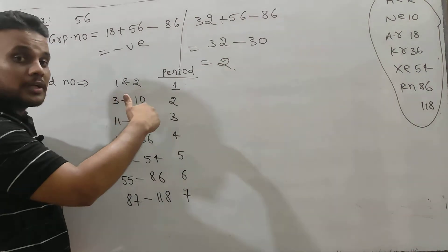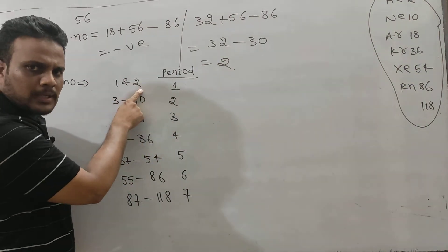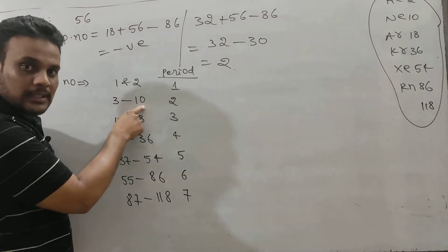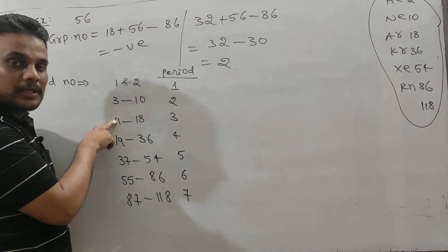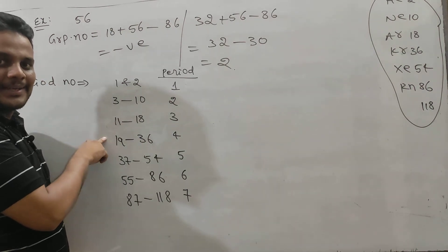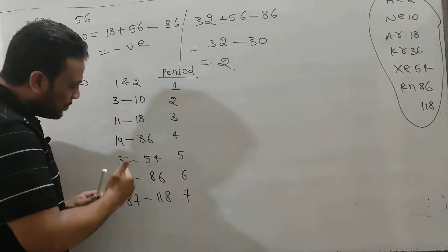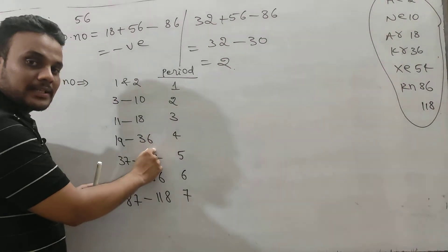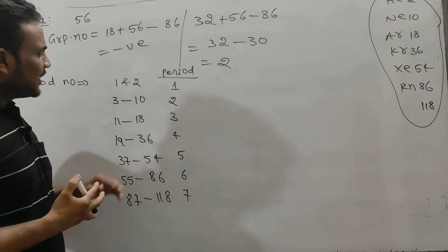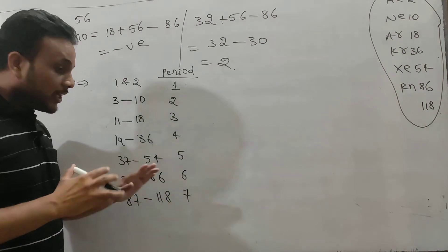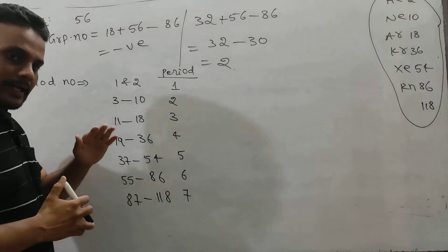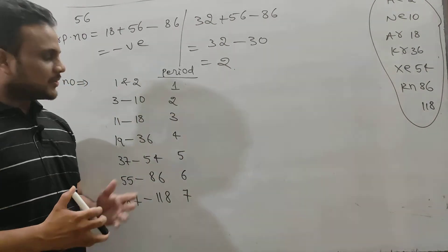After noble gas atomic number 2, the next period starts with 3. After 10, next period starts with 11. After 18, you take 19. 19 to the next noble gas 36. Every period ends with a noble gas configuration and starts with the post-noble-gas configuration, that is an alkali metal. So if you know the atomic numbers of noble gases, you can easily know these period ranges, because these atomic numbers are next to noble gas atomic numbers.